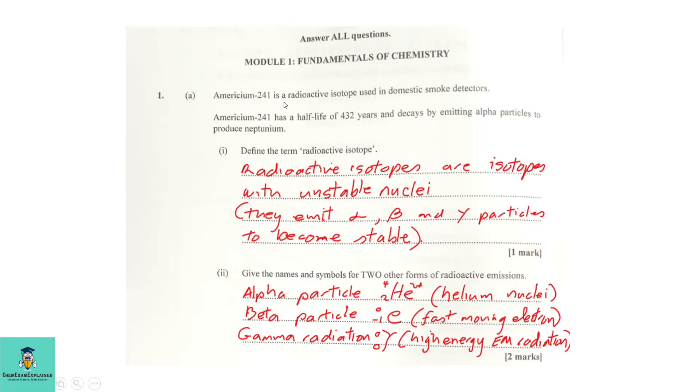Americium-241 is a radioactive isotope used in domestic smoke detectors. Americium-241 has a half-life of 432 years and decays by emitting alpha particles to produce neptunium.